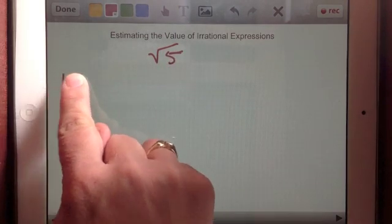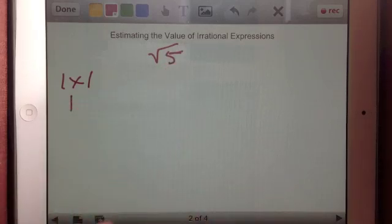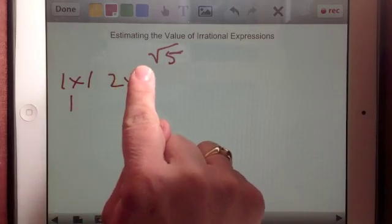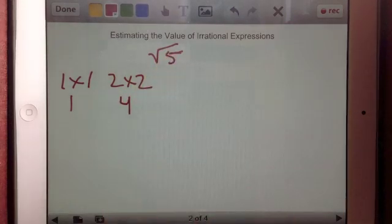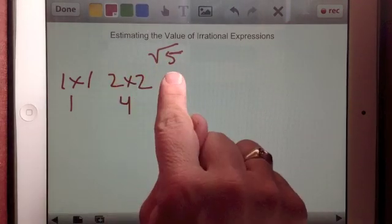So for instance, 1 times 1, that equals 1, not very close to 5. 2 times 2, so we'll go to the next integer, equals 4. 4 is very close to 5, but let's see what happens if we go to the next integer.